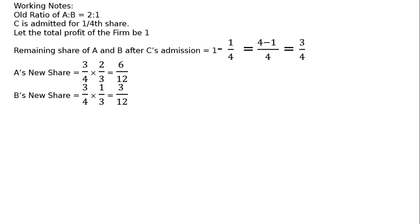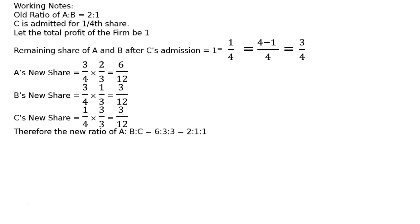A's new share is 3/4 × 2/3 = 6/12. B's new share is 3/4 × 1/3 = 3/12. C's new share is 1/4 = 3/12. Therefore the new ratio of A to B to C is 6:3:3, which simplifies to 2:1:1.